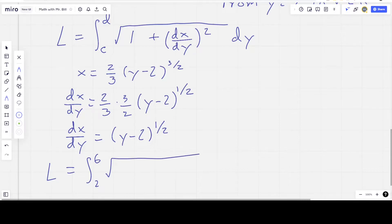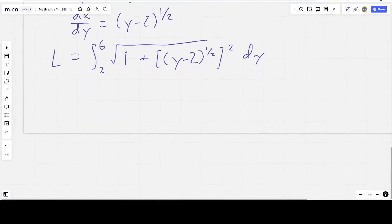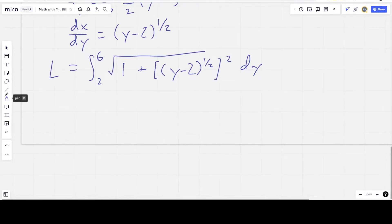Of the square root of 1 plus, and then we've got (y - 2) to the 1/2, and then all of that's squared. These problems are usually designed to make life fairly easy for you in terms of the calculations. All right. So now we get L is equal to the integral from 2 to 6 of the square root of 1 plus, and then the square and the square root, those are going to cancel. So we get 1 plus (y - 2).